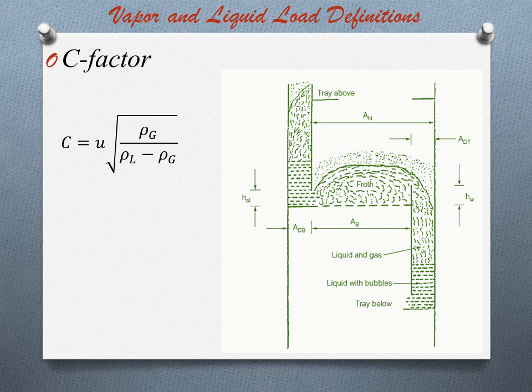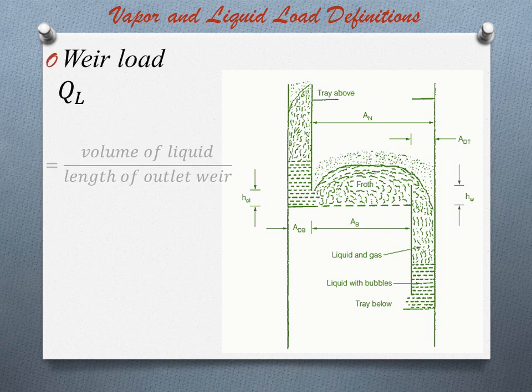Next is weir load. For trays, as distinct from downcomers, liquid load is normally defined as QL equals the volume of liquid divided by the length of the outlet weir, represented as Q divided by LW. This definition describes the flux of liquid horizontally across the tray.